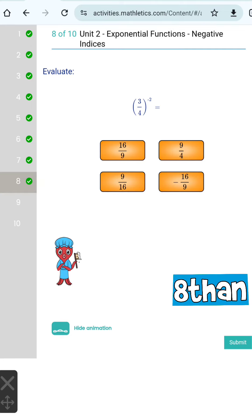And then 3 over 4 to the power of negative 2 is going to be 16 over 9 because just like before, a fraction to the power of a negative integer will just make it bigger, but a fraction to the power of a positive integer will make it smaller.